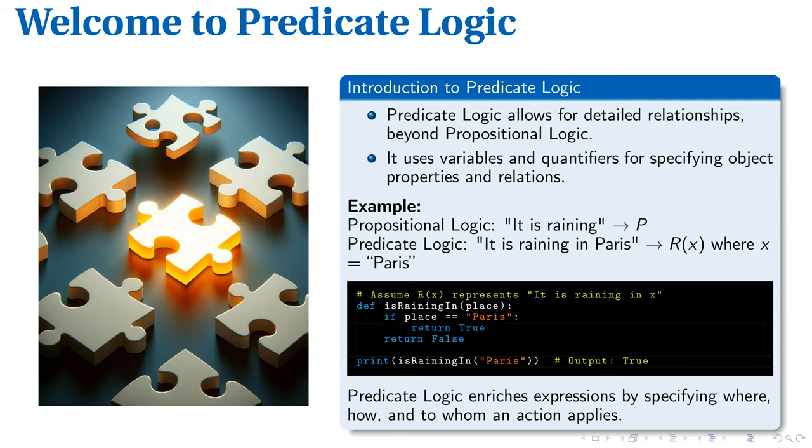Predicate logic expands on propositional logic's capabilities, precisely expressing complex relationships and properties. With propositional logic, it is raining would be expressed succinctly as P. However, with predicate logic we can be more specific. It is raining in Paris is represented as R(x), where x is Paris. This subtle but significant variation allows for nuanced expressions and specifications.